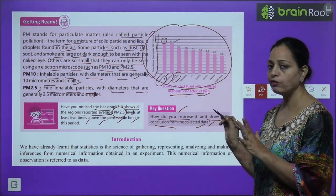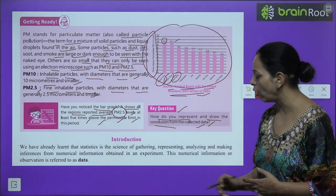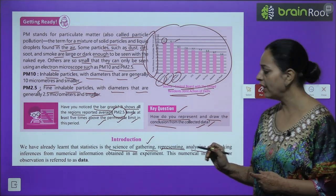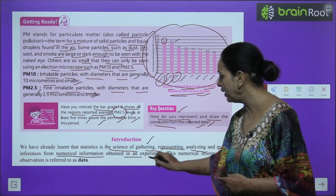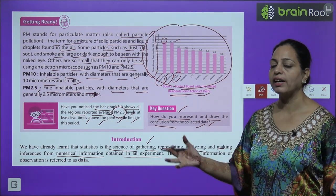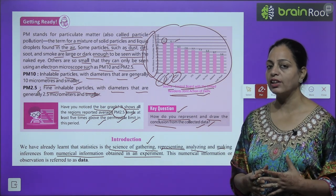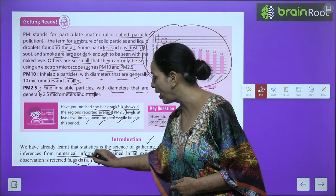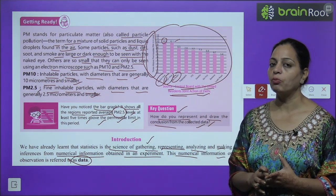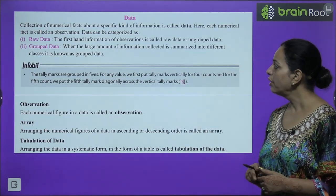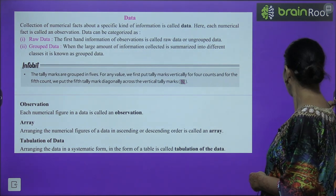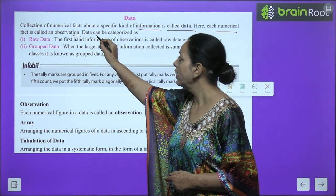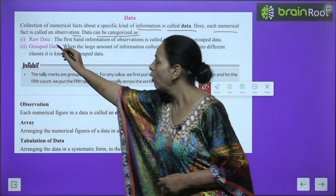The bar graph is very useful in our practical life. Statistics is the science of gathering, representing, analyzing and making inferences from numerical information obtained in an experiment. With the help of statistics, we can collect, organize, analyze and represent data, and then draw conclusions. This numerical information or observation is referred to as data. A collection of numerical facts about a specific kind of information is called data, and each numerical fact is called an observation.